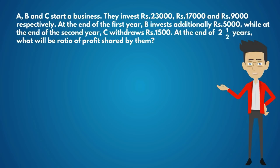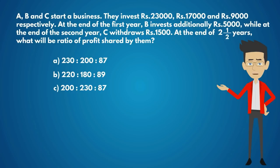The options are: A) 230:200:87, B) 220:180:89, C) 200:230:87, D) 189:200:90, and E) None of these.